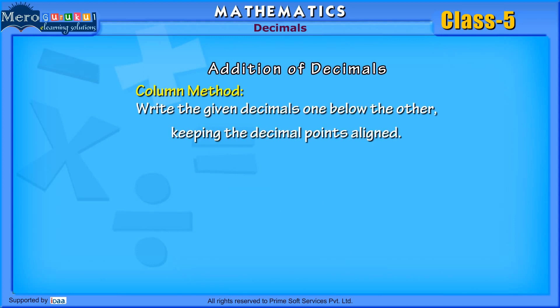Column Method: Write the given decimals one below the other, keeping the decimal points aligned. Now, we shall add the given decimals using column method only.